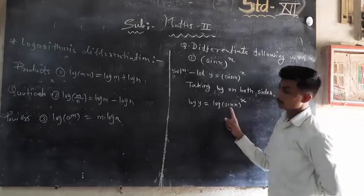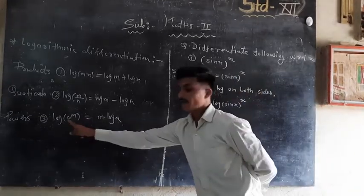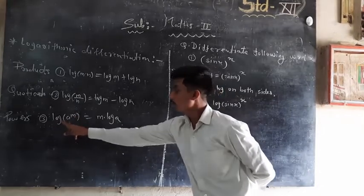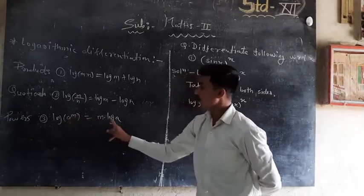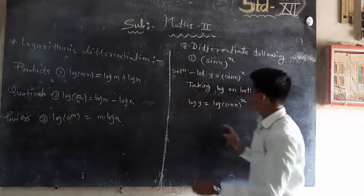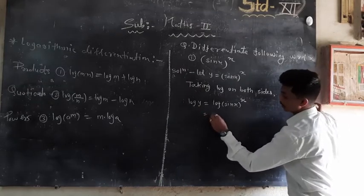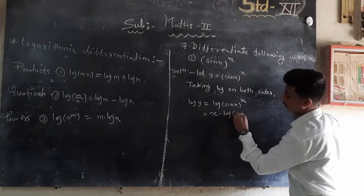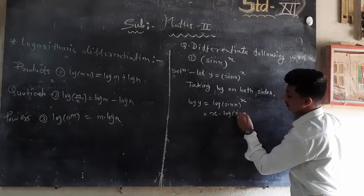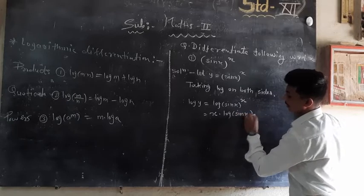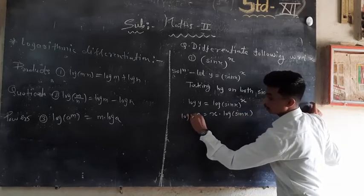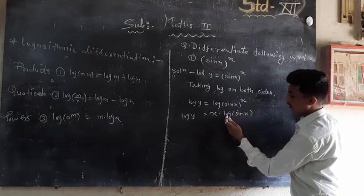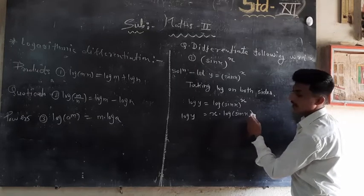Using the rule log(a^m) = m · log(a), we apply it here: log(a^m) = n · log(a). So we write log(y) = x · log(sin x).